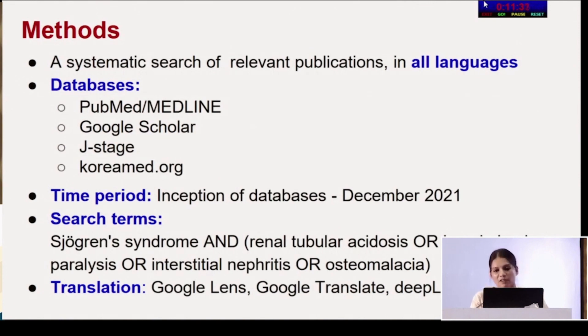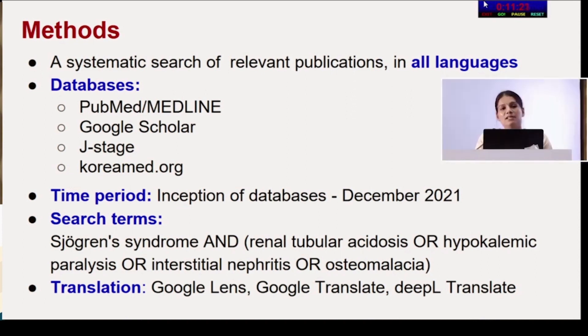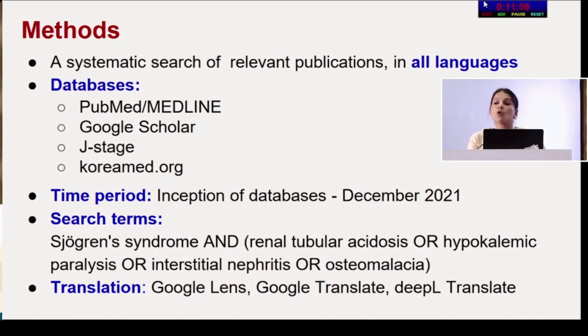A systematic search of relevant publications in all languages was undertaken using only free databases — PubMed, Google Scholar, JSTAGE, and KoreaMed — from inception through December 2021. Search terms included Sjogren's syndrome and renal tubular acidosis, hypokalemic paralysis, interstitial nephritis, or osteomalacia. Foreign language publications were translated using Google Lens, Google Translate, and DeepL Translate.